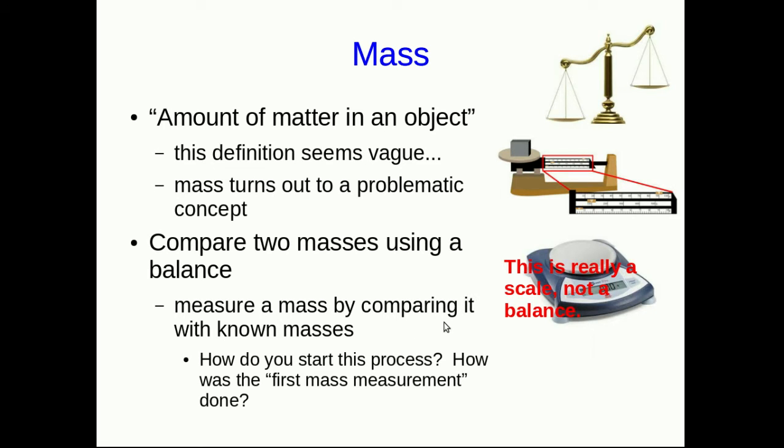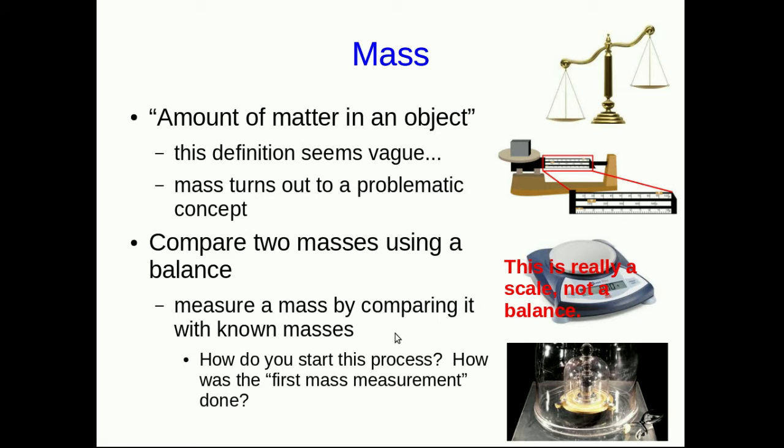But you might see that there's a bit of a problem here. How do you start this process? If all measurements of masses involve comparing with known masses, how is the first mass measurement done? Well, remember back to measurement that all measurements are comparisons. So before you can do any measurement of anything, you need to set a standard. And so the standard currently is this chunk of platinum that's stored in Paris. And originally it was based on a known volume of water. A kilogram was defined as the mass of a liter of water.